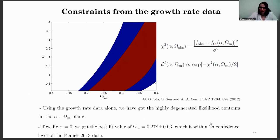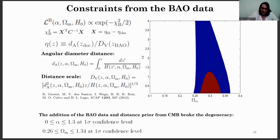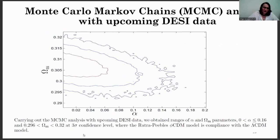We also carried out observational constraints on the parameters of the quintessence scalar field models using different observational data sets. Using the growth rate data alone, we obtained highly degenerate likelihood contours in the alpha–omega_m plane. The addition of baryon acoustic oscillation data and the distance prior from the CMB broke this degeneracy, and we obtained ranges for the alpha and omega_m parameters at the one-sigma confidence level. We also carried out MCMC analysis with upcoming Dark Energy Spectroscopic Instrument data and obtained ranges for alpha and omega_m parameters at the three-sigma confidence level. The Ratra-Peebles phi CDM model is in compliance with the lambda CDM model.